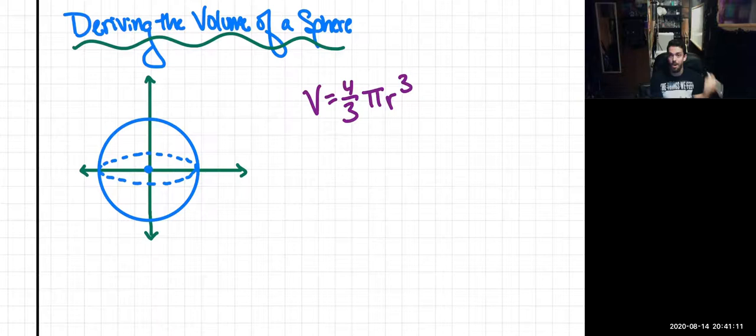I'm going to start by just calling our limits of integration negative r and r, assuming that we're centered at the origin. So this will be negative r and we're going up to r.